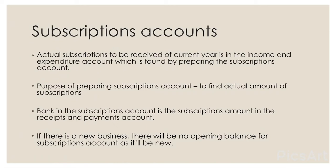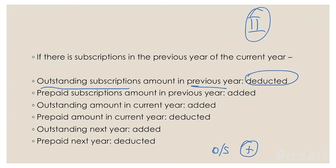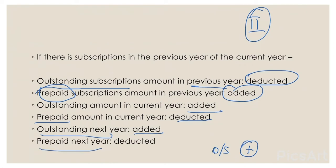The bank figure in the subscriptions account is the amount from the receipts and payments account. For a new business there will be no opening balance. There is also a second method using direct calculation. If there are outstanding subscriptions from the previous year, you deduct them — the opposite of the normal rule. If subscriptions were prepaid in the previous year, you add them. For the current year: outstanding is added normally and prepaid is deducted normally.